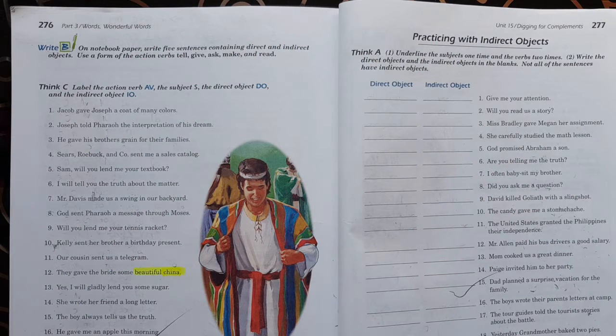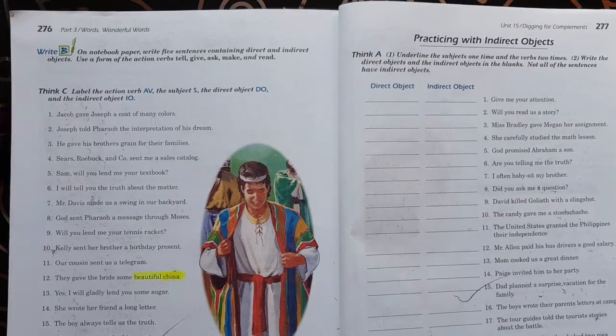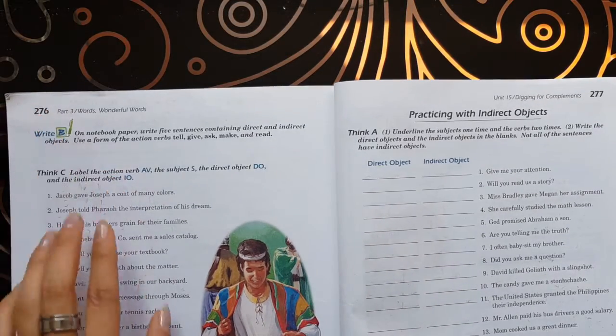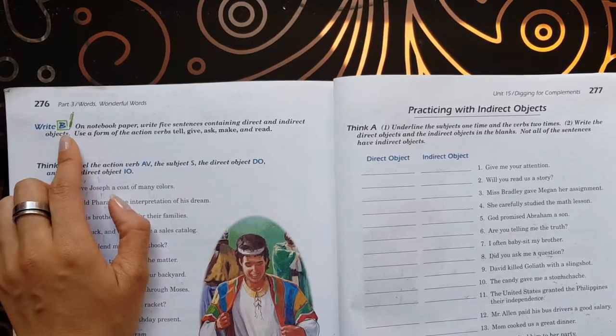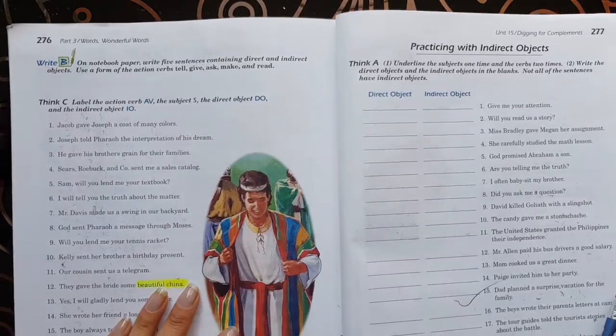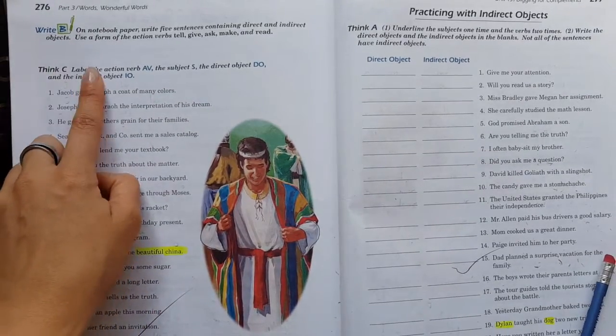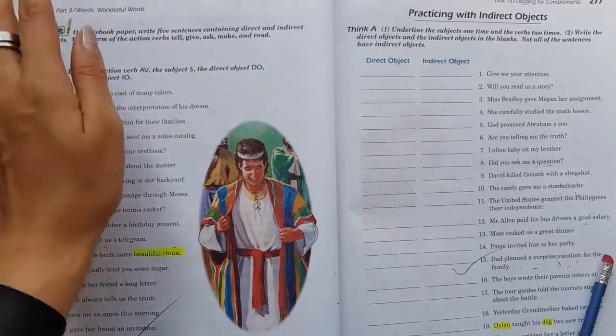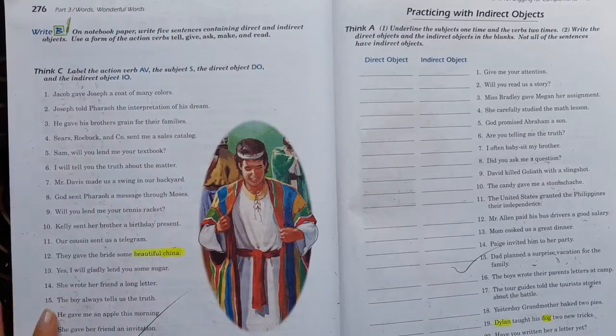Hi guys, today we are going to work page 276. Write B, we are not going to do it. We are going to do letter C, thing C. And here it says,